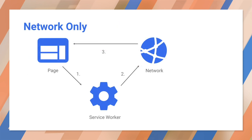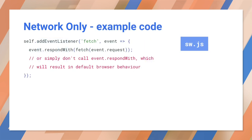The opposite approach is network-only. This is right for stuff that has no offline equivalent, such as analytics pings or non-GET requests that require a dynamic response from the server. The code here essentially mimics the default browser behavior without a service worker. In a real-world application, you'd use code to choose requests that would be network-only.